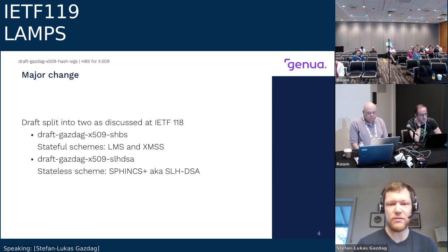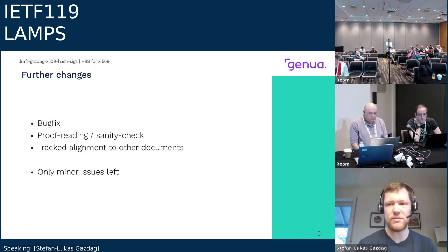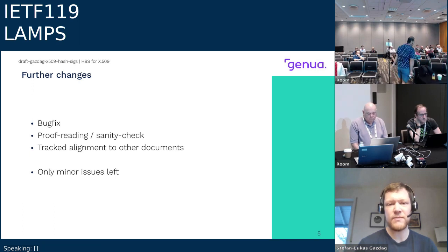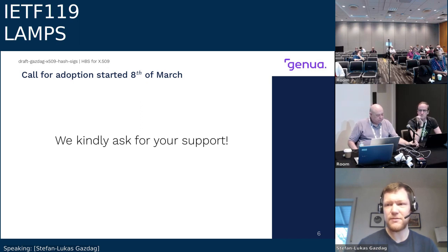The major change was to split the document into two. One document covers stateful hash-based signatures, which is stricter and addresses all key management issues. The other document covers only SPHINCS+ / SLH-DSA, where the requirements are less strict. This split was discussed at the last LAMPS meeting. Minor changes also include a bug fix (thanks to Russ for spotting it), proof reading, sanity checking, and alignment tracking with other similar documents.